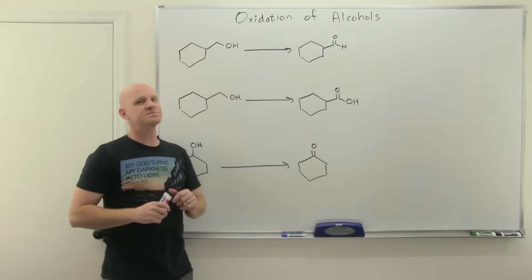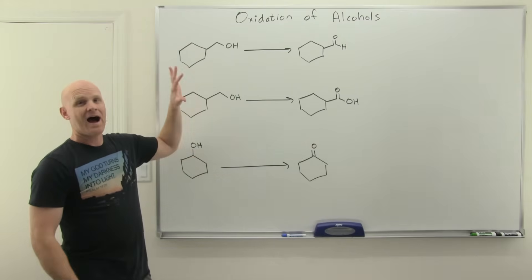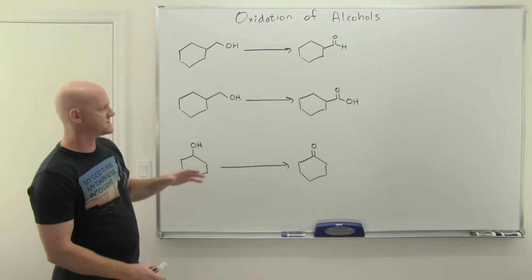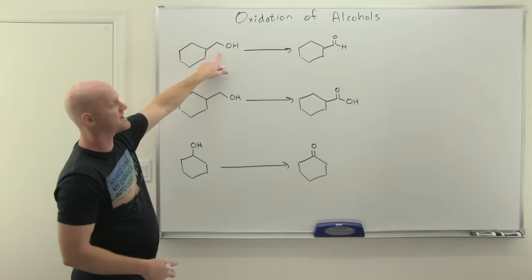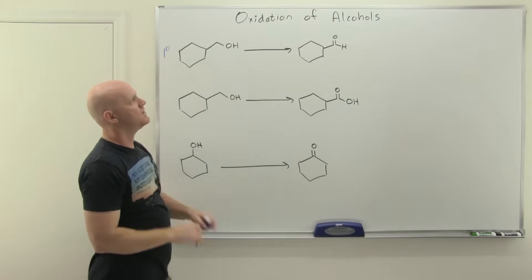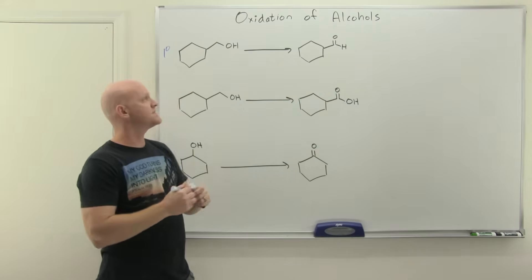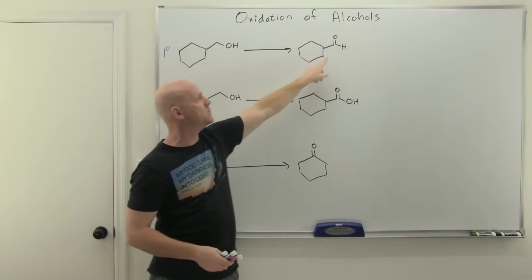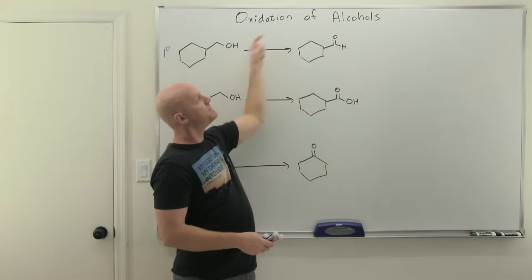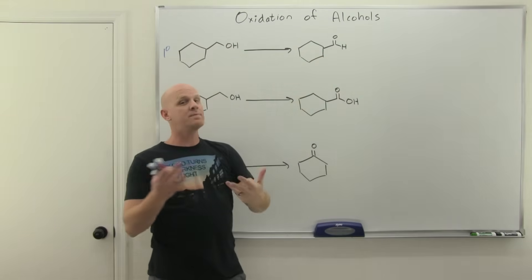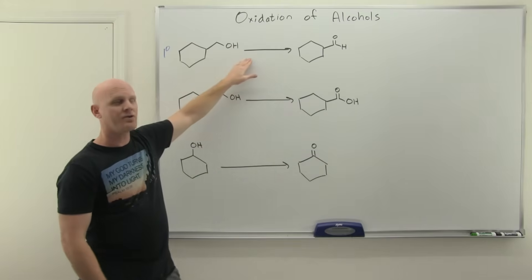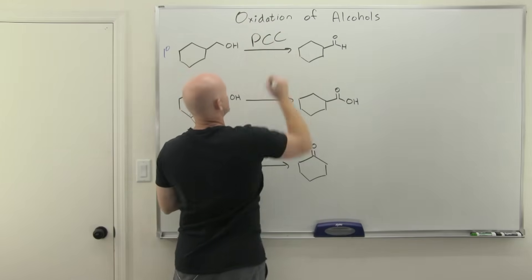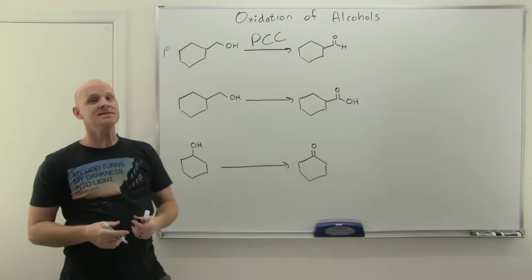Let's pick the appropriate reagent for the following oxidations. In the first example, we're starting with a primary alcohol and ending up with an aldehyde — only one step of oxidation, even though two are possible. We gain one bond to oxygen and lose one hydrogen. To oxidize a primary alcohol to an aldehyde and stop there, you need to use PCC.